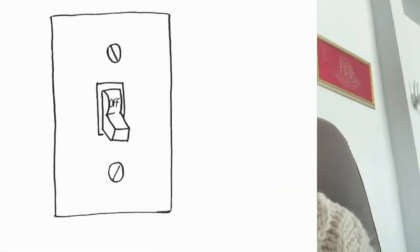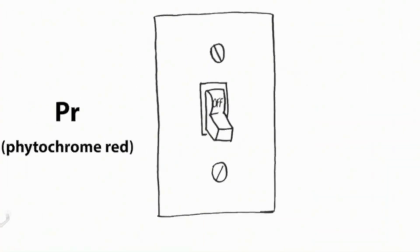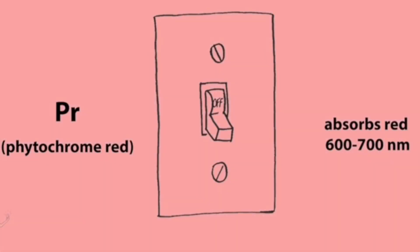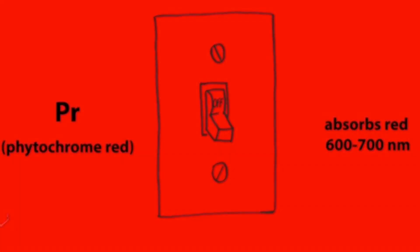This activation serves as a signal to plants, indicating that it is time to initiate flowering and fruiting processes, which are essential for reproduction. Red light, particularly in the 600 to 700 nanometer range, plays an important role in activating plant photoreceptors called phytochrome.